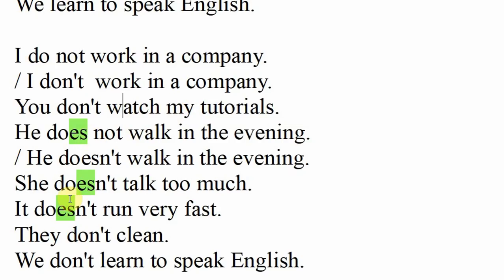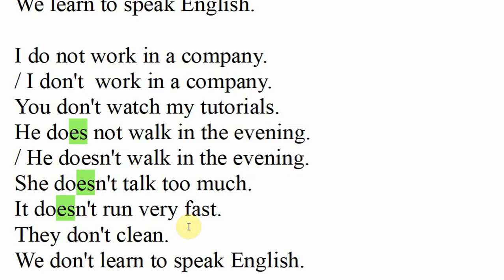He, she, it ke saad aur aek singular person ke saad - unke saad 's' lagta hai verb ke saad. Negative form mein hum woh 's' hata ke 'do' ke saad lagate hai, aur woh 'does' hojaata hai. He walks in the evening - negative form mein: He does not walk in the evening, woh sham mein nahi chalta. Short form mein 'does not' ko hum 'doesn't' likhtay aur parhtay hain: He doesn't walk in the evening. She doesn't talk too much - woh bohut zyadha baatay nahi kerti. It doesn't run very fast - yeh bohut teez nahi bhaagta.